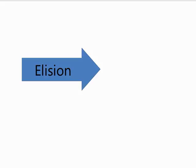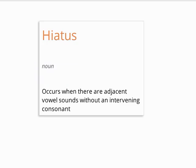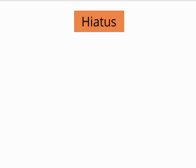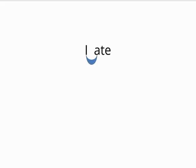Elision involves adjacent vowel sounds. When there are adjacent vowel sounds without an intervening consonant, hiatus occurs. Hiatus means gaping, referring to the open mouth. For example, the clause I-8 contains a hiatus between the I and the A. Note that the word hiatus itself contains a hiatus between the I and the A.